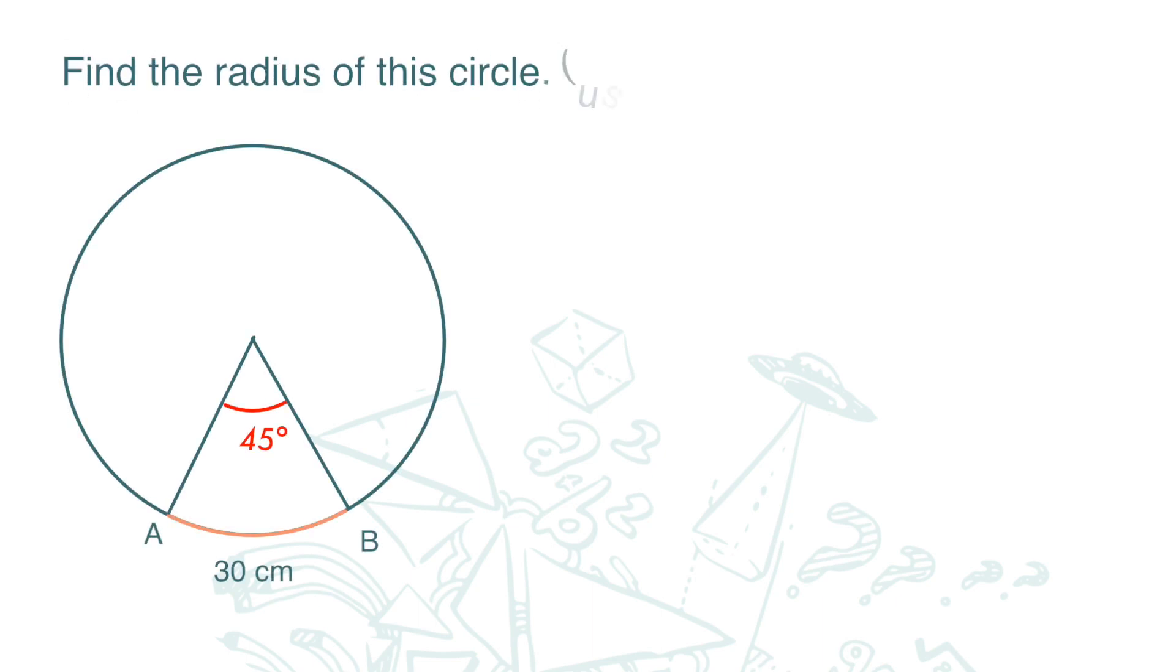Let's look at this diagram. Find the radius of this circle. Minor arc here is 30 centimeter and angle at center is 45 degrees.